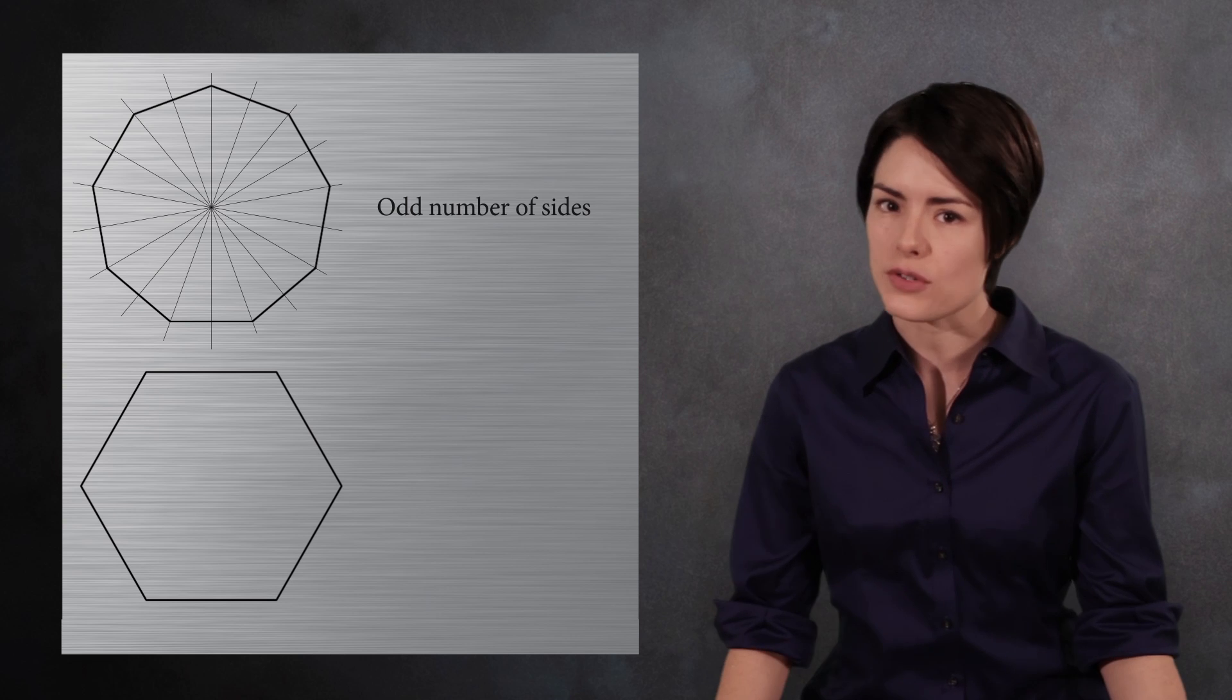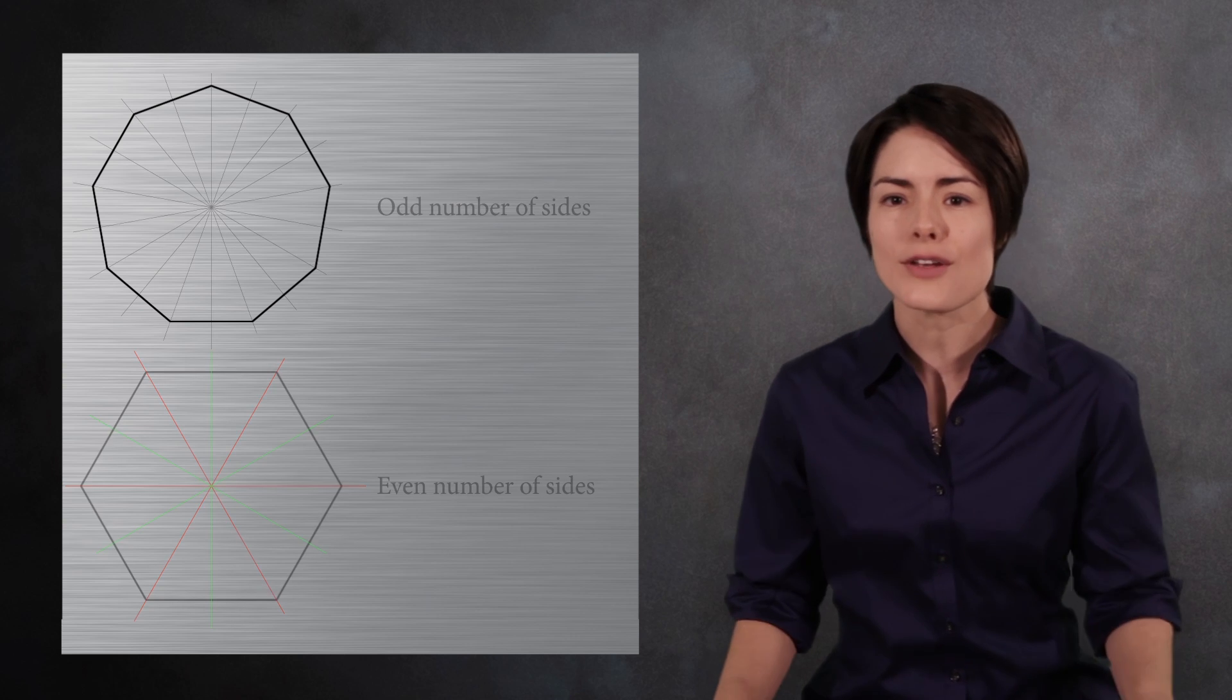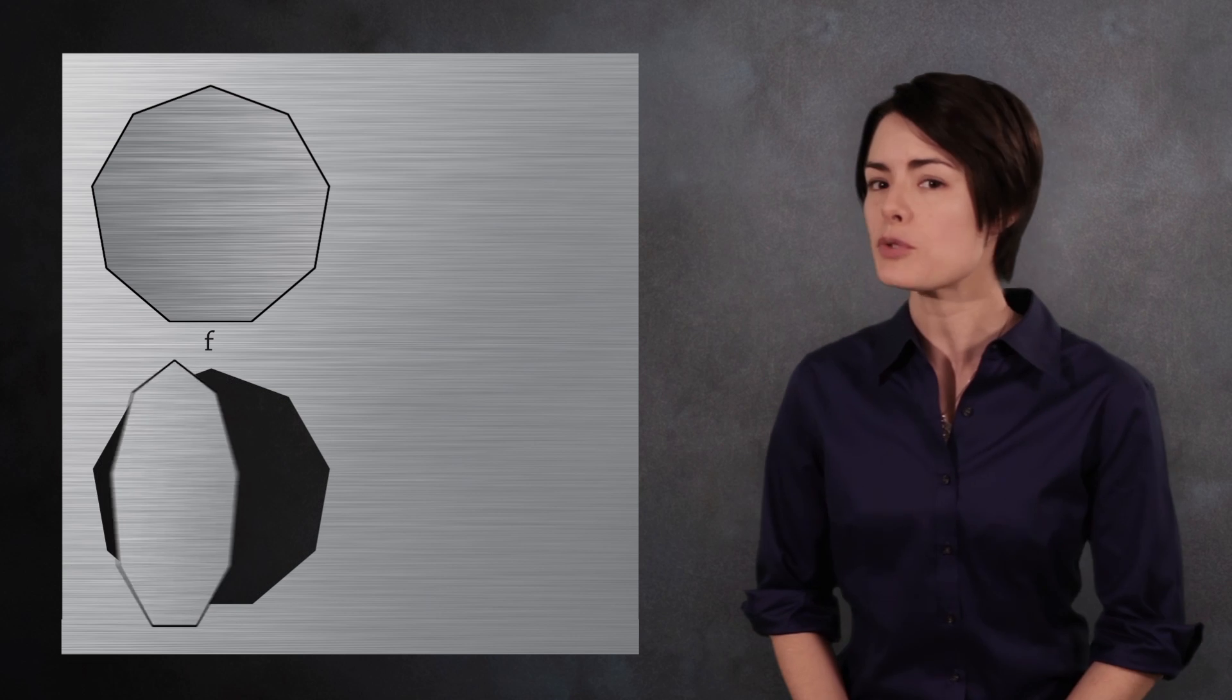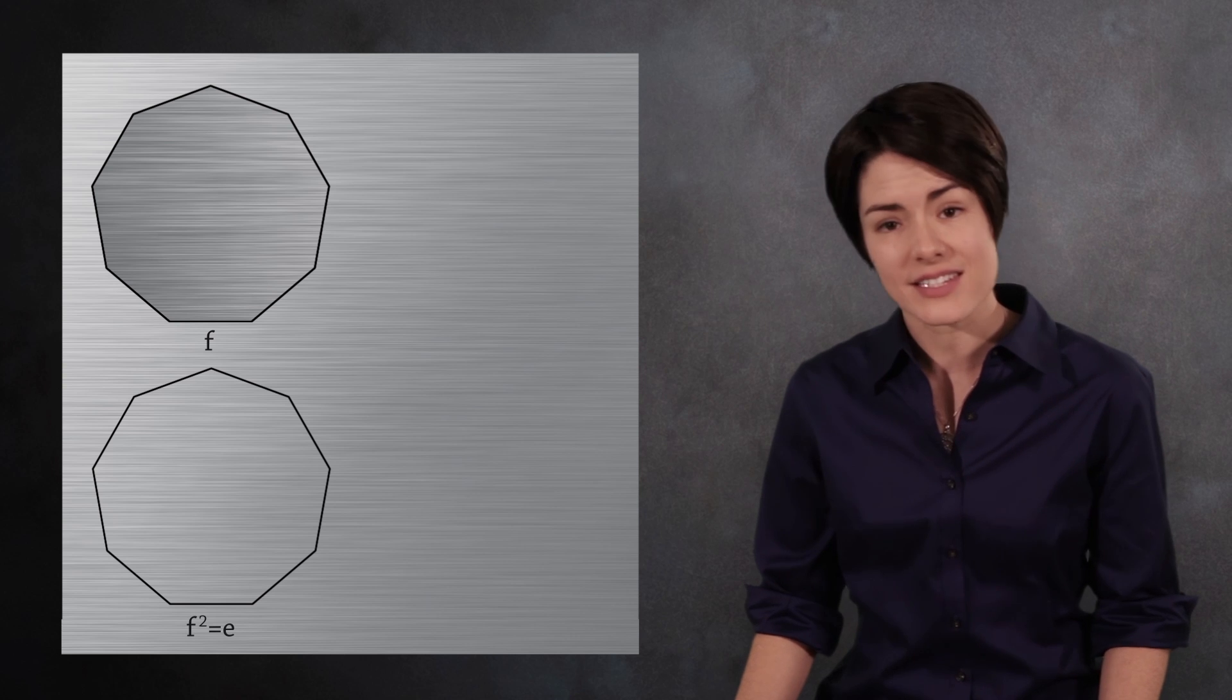Let's start with reflection about the vertical axis and call this transformation F for flip. If you flip twice, you return to the original position of the shape. So F squared is E.